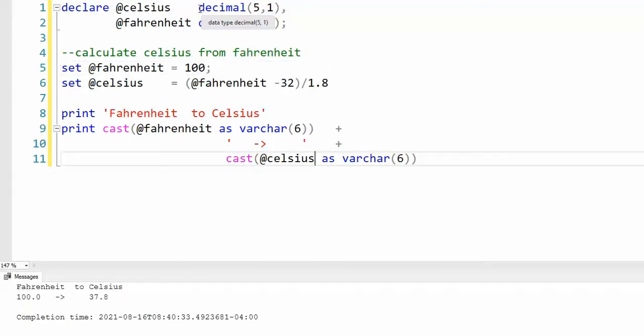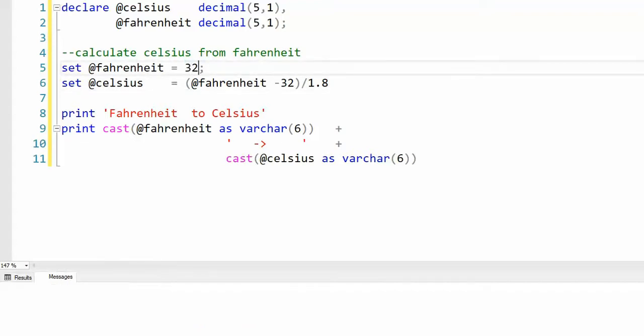In this example, we're going to be using decimal 5, 1, and we're going to compute Celsius now. Notice that we're saying Fahrenheit of 100 minus 32 divided by 1.8. Let's calculate that. And notice 100 is 37. And if we say 32 Fahrenheit, 32 Fahrenheit is 0 in Celsius.